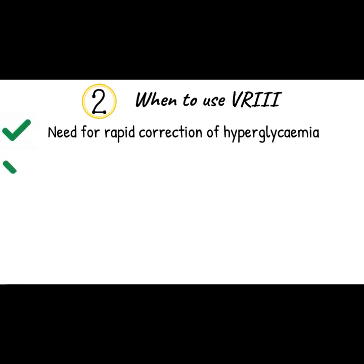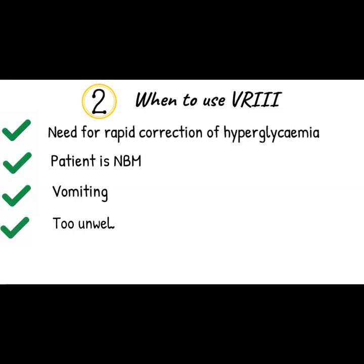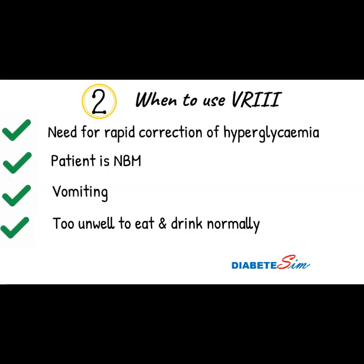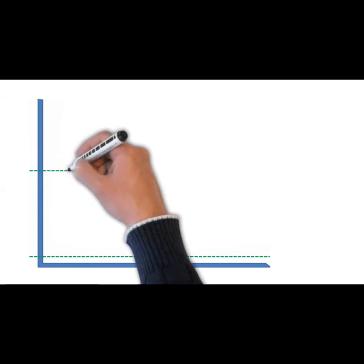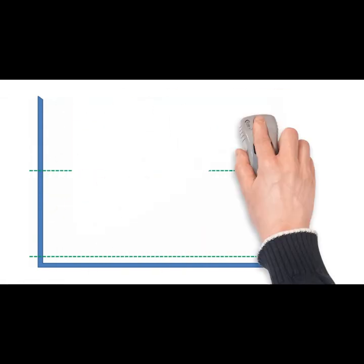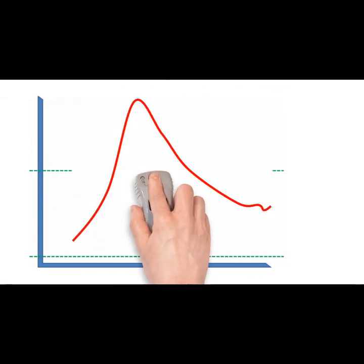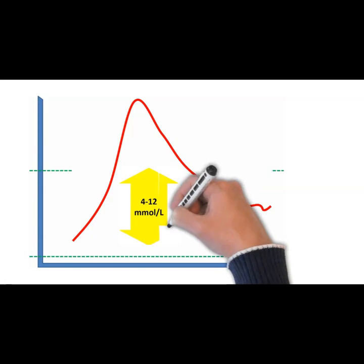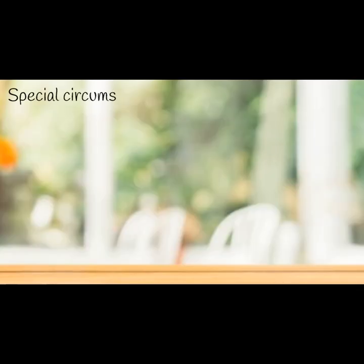When should we be using variable rate IV insulin? Whenever there is a need for rapid correction of hyperglycemia, variable rate IV insulin infusion can be used — especially when the patient is nil by mouth, the patient is vomiting, or the patient is too unwell to eat or drink normally. The idea is to bring down the high glucose within target range and keep it maintained.